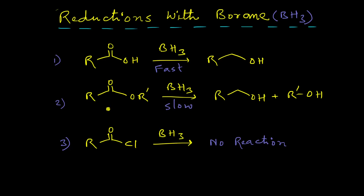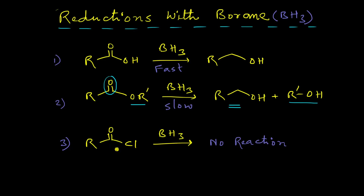The second reaction is the reduction of carboxylic acid ester molecules. The same situation is applicable here and the products are two alcohols — the R-OH part comes from the OR group, and the carbonyl group is reduced to give the other alcohol. In the third category, the reduction of carboxylic acid chlorides by borane does not occur — no reaction takes place and no reduction product is obtained.